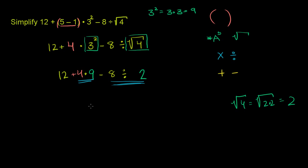So 4 times 9 is 36. And 8 divided by 2 is 4. So we are left with 12 plus 36 minus 4.